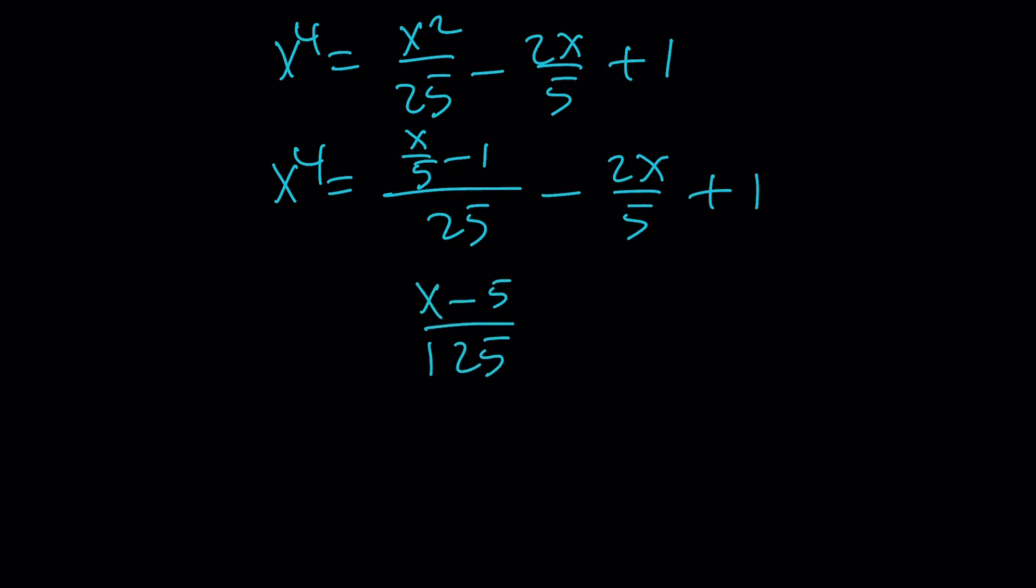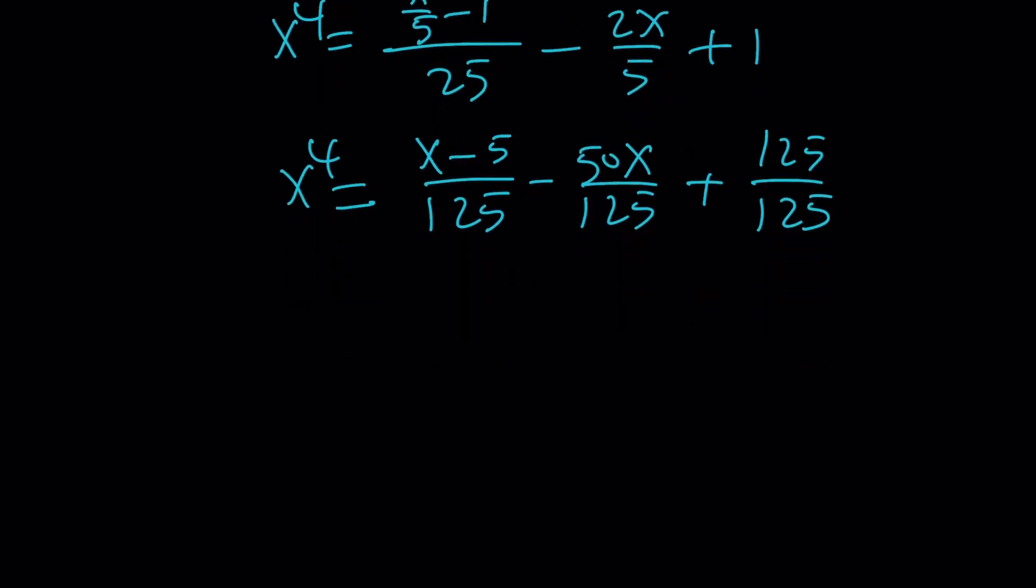So that's going to be x minus 5 over 125, 5 times 25. And here, if you want to make a common denominator, we can multiply this by 25. That's going to give us 50x over 125. And finally, plus 125 over 125. So we can also linearize x to the fourth power this way. And let's go ahead and make a common denominator. x minus 50x is just going to be negative 49x minus 5 plus 125. That's going to give you positive 120. And all of that is divided by 125.